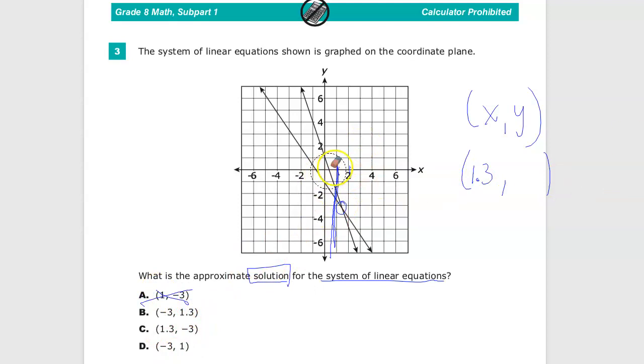Now my y. Fortunately, they intersect pretty much exactly on the line down here. Between negative 2 and negative 4 would be negative 3 because we're going down. So 1.3 and negative 3.